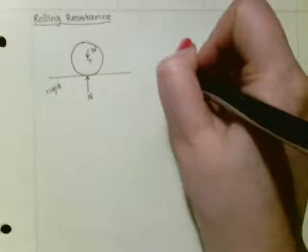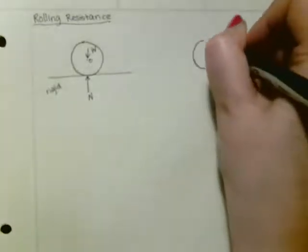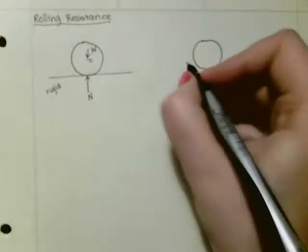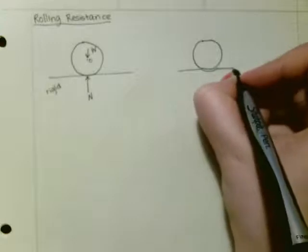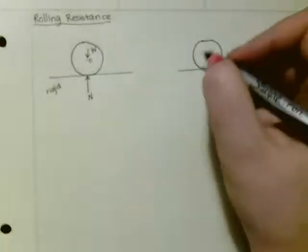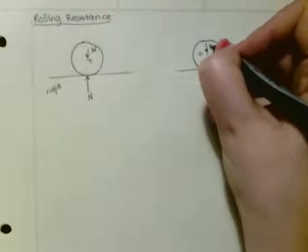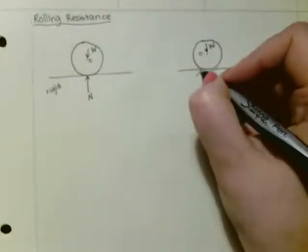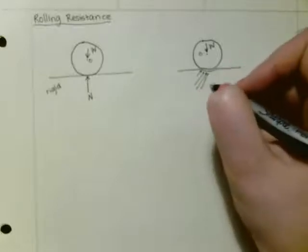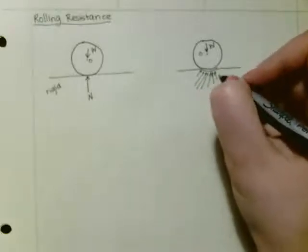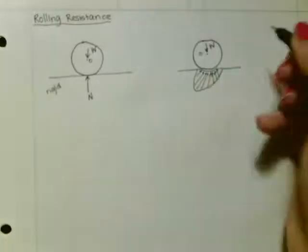But what if the surface was not completely rigid? And you still had your cylinder with your weight. This time, you're going to get a normal force that's distributed along the surface such that it looks more like this.